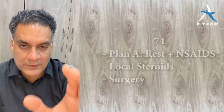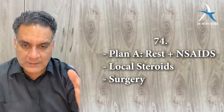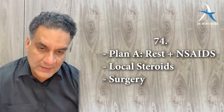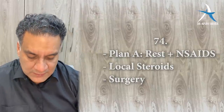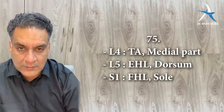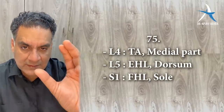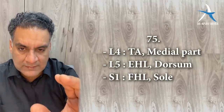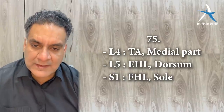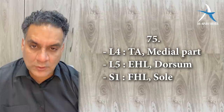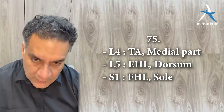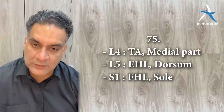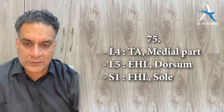Point number seventy-four: when treating disc prolapse, Plan A is rest plus NSAIDs. If not relieved, local steroids. If still not relieved, surgery. Point number seventy-five: L4 nerve root supplies the myotome for tendo Achillis. L5 supplies extensor hallucis longus and the dorsum of the foot. S1 supplies flexor hallucis longus.